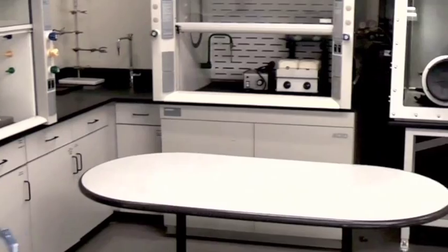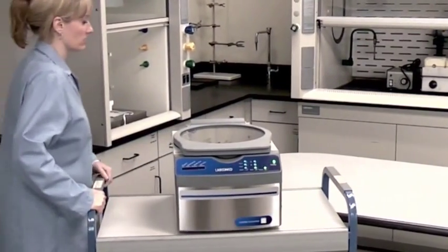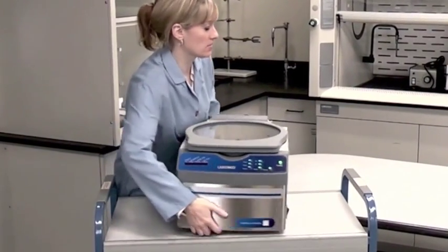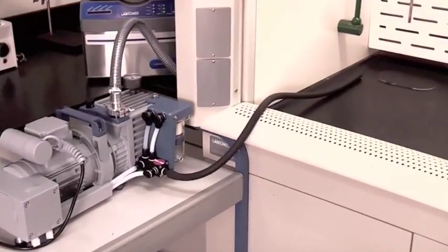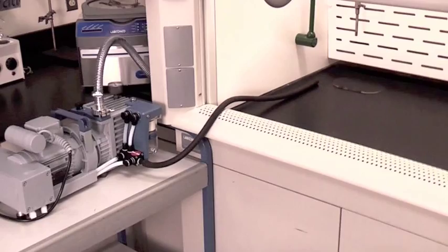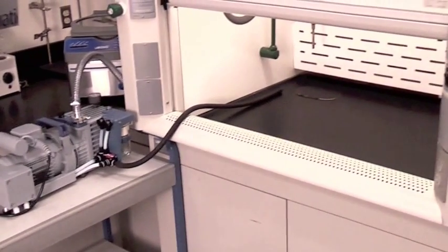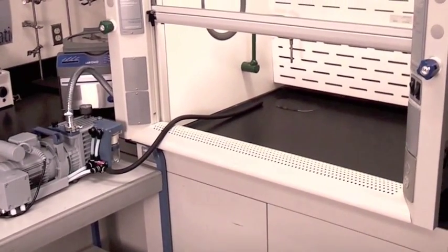Once you have the correct electrical configuration, find a location that will accommodate each component of the Centravap system. You can use a lab bench or mobile cart for these items. Venting the vacuum pump to a fume hood is recommended to prevent vapors that are being evaporated from entering the room.